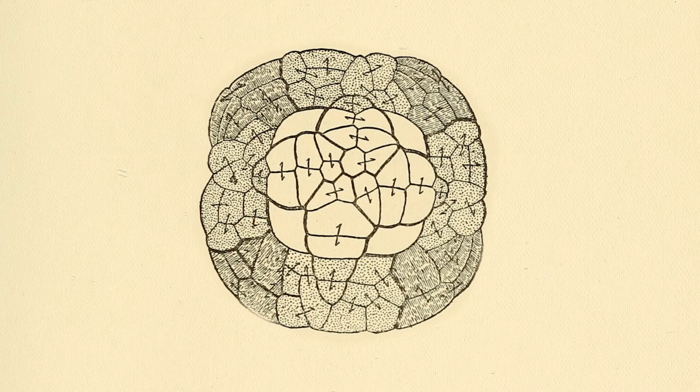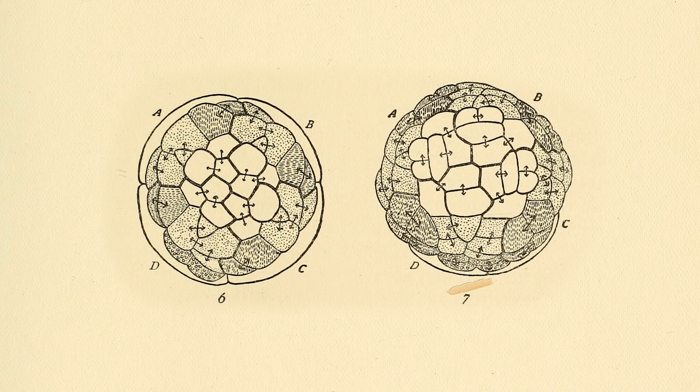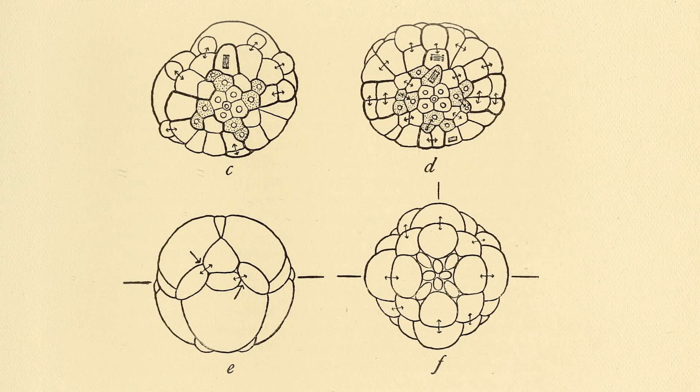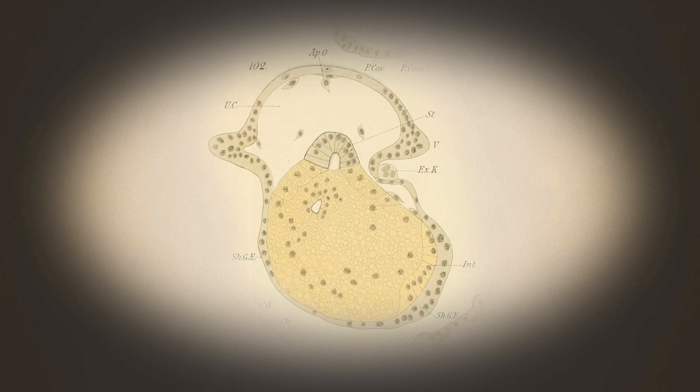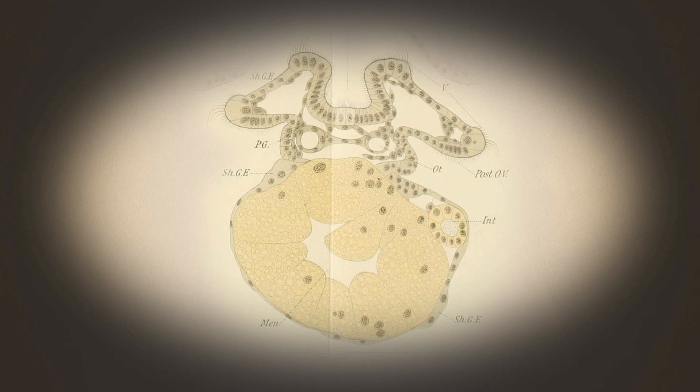It was difficult and time-consuming work. Each of Conklin's drawings were multi-layered sketches, and they had to be combined to make one full image. "I still don't fully understand how he was able to do it, especially because in the later stages of the embryos, there gets to be so many cells that it just seems impossible without some of the more modern tools that we have now to track cell lineages."